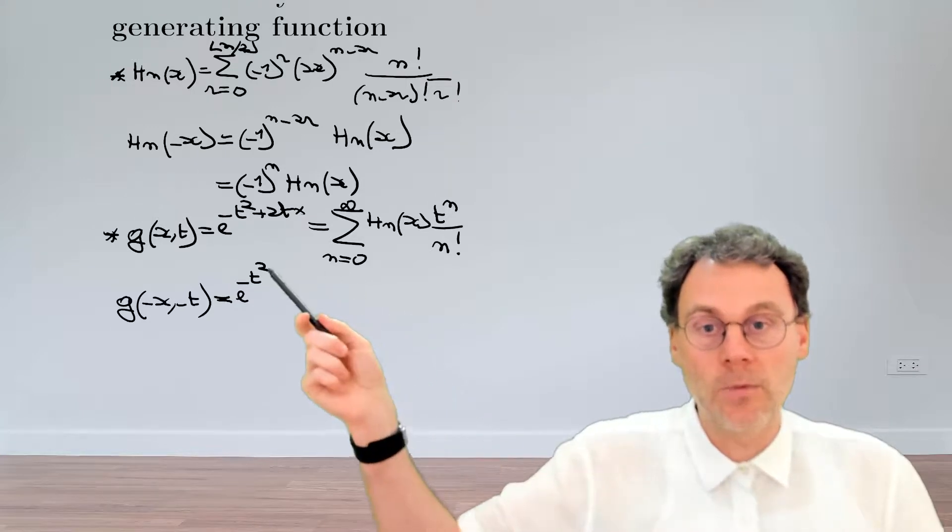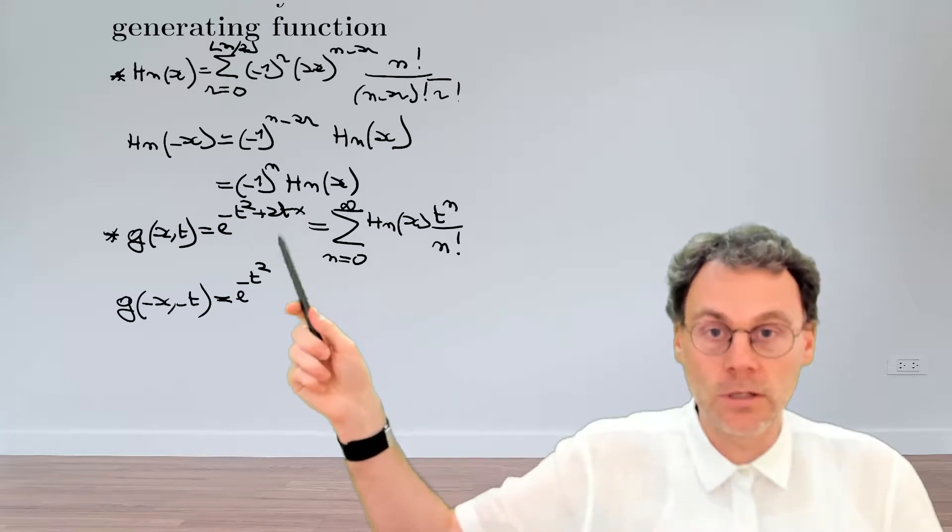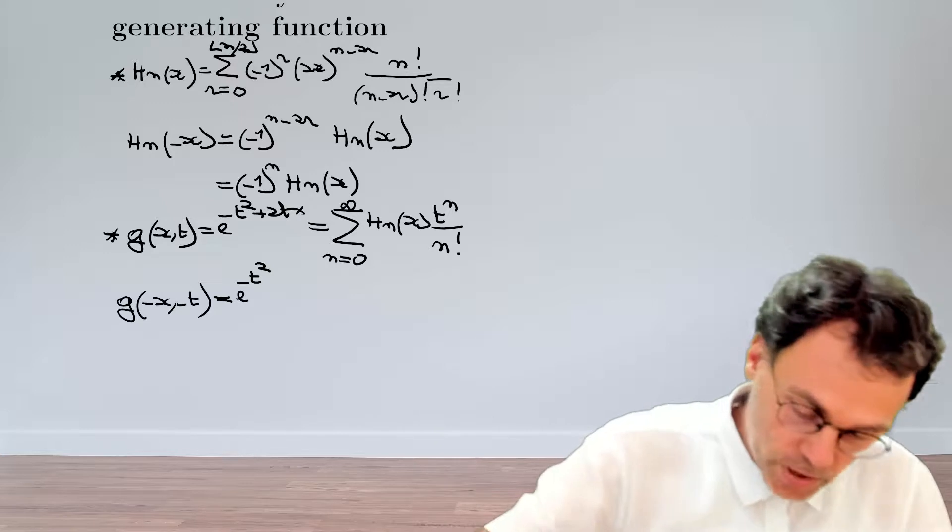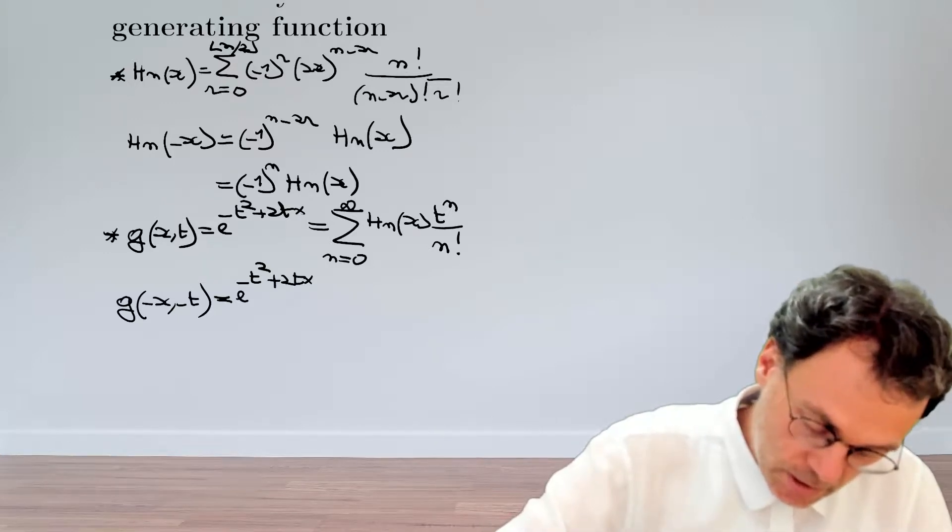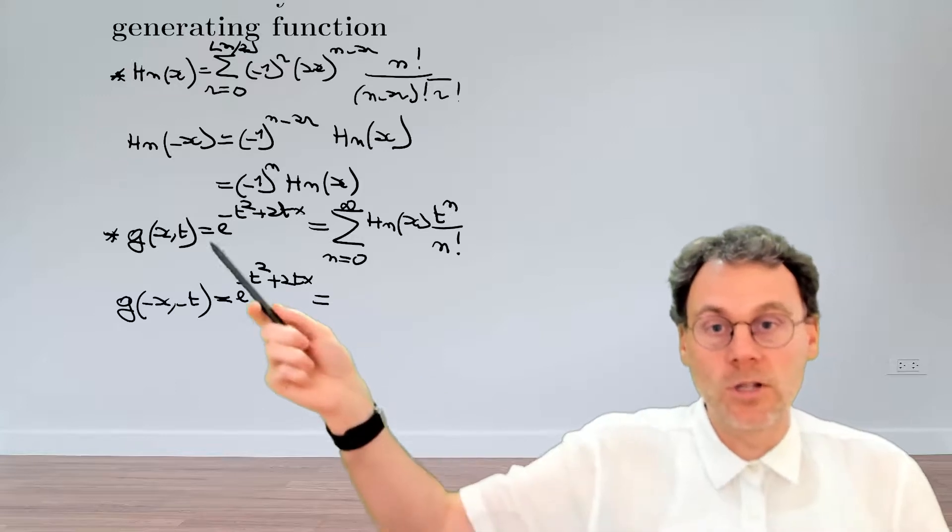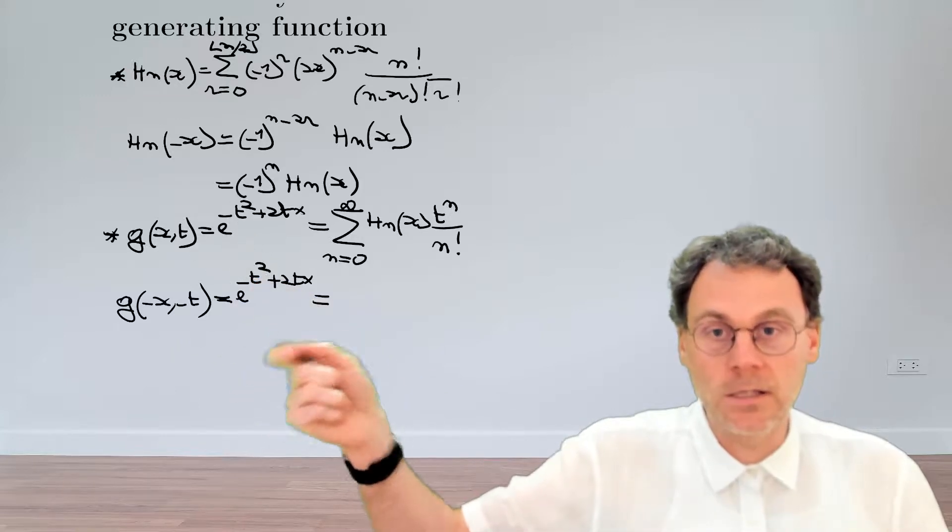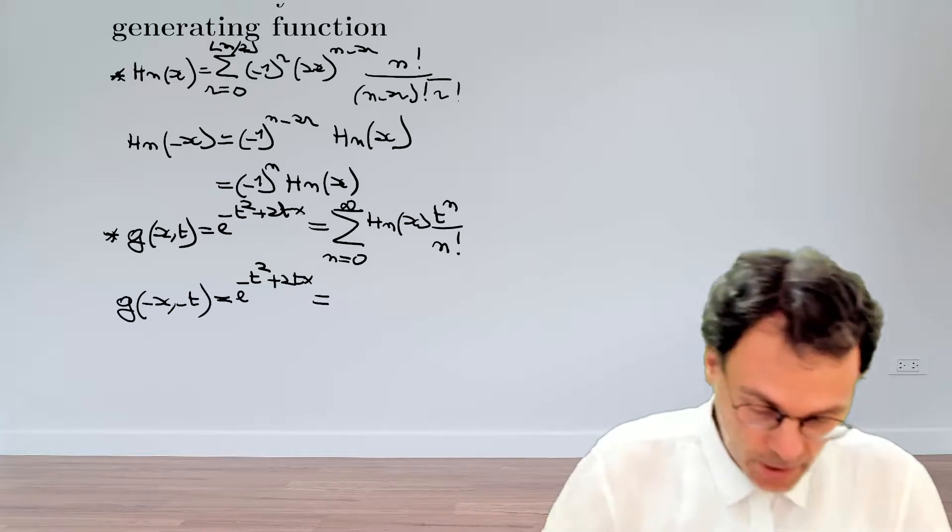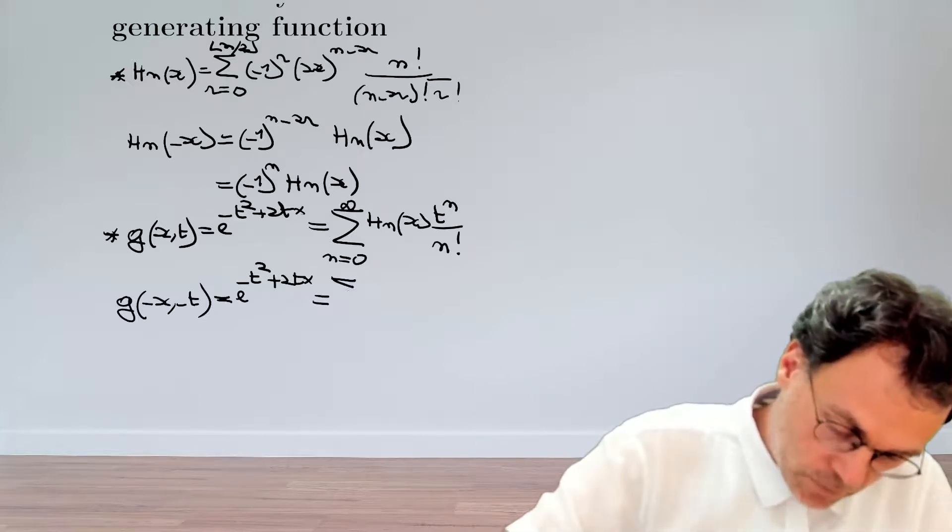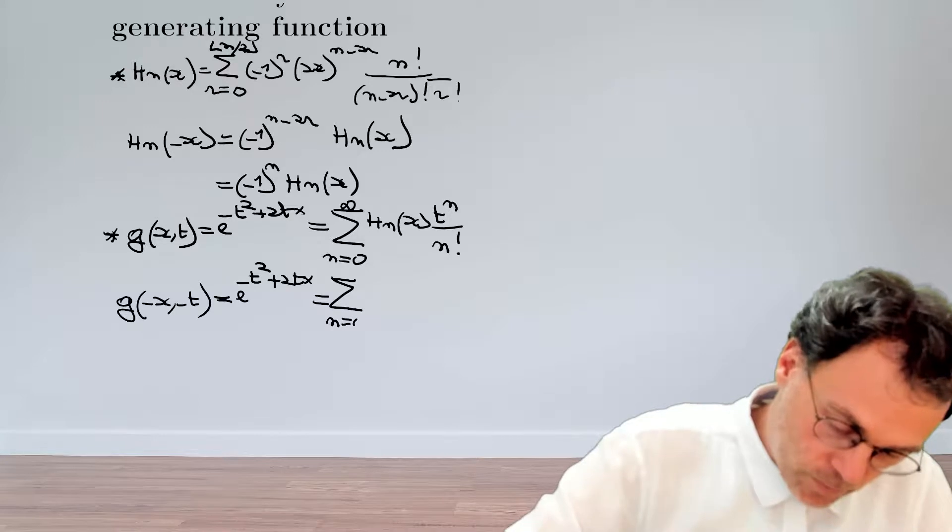And likewise, since you pick up a minus sign both for the t and for the x, also here nothing changes and it's still 2tx. So the generating function g of x and t is the same as the generating function of minus x minus t. That's very interesting because that, of course, will allow us to solve our problem here.